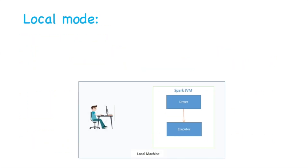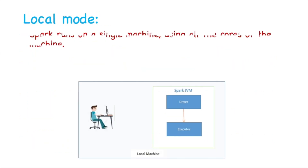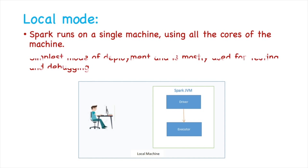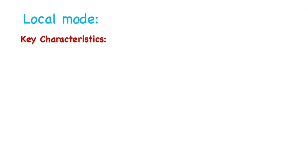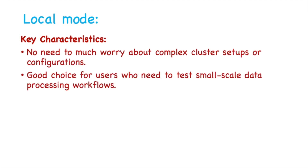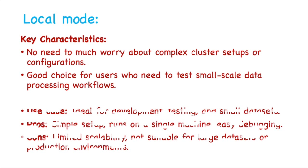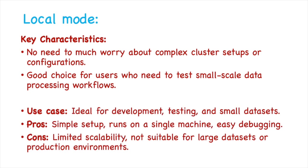Now let's see the next deployment mode, which is local mode. In local mode, Spark runs on a single machine using all the cores of that machine. Local mode is the simplest mode of deployment and is mostly used for testing and debugging. In local mode, we don't have to worry about complex cluster setup or configuration. It is a good choice for users who need to test small-scale data processing workflows, ideal for development, testing, and small datasets, and it is easy to debug.